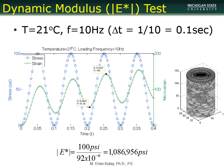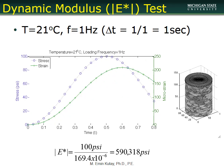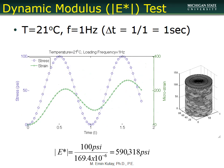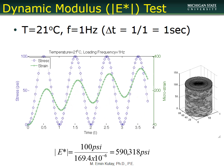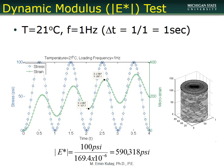Going from minus 10 to 21 degrees Celsius, if we keep temperature constant but decrease the frequency, we see a further decrease in dynamic modulus. We keep the stress constant, and the measured microstrain increases as a result, giving us a decrease in dynamic modulus.